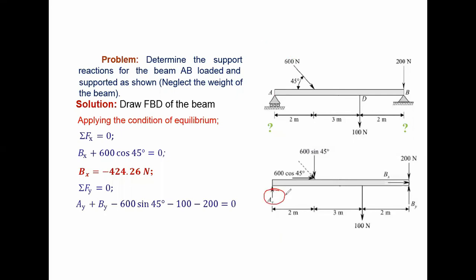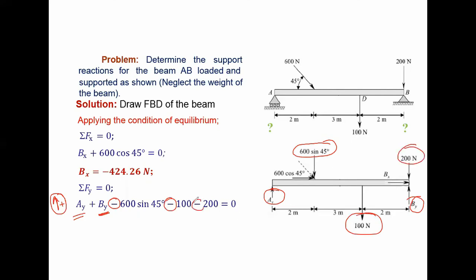Now let's understand how the vertical force balance equation is derived. Considering upward direction as positive: Ay is acting vertically upward so positive, By is also upward so positive, 600 sin 45 is acting vertically downward so negative, 100 N is acting vertically downward so negative, and 200 N is acting vertically downward so negative. Total force equals zero.